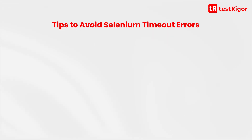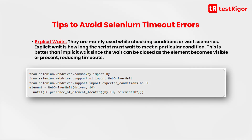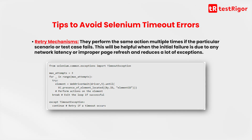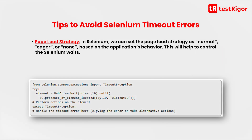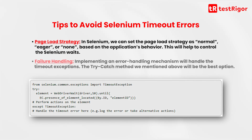Tips to avoid Selenium timeout errors. Explicit waits — they are mainly used while checking conditions or wait scenarios. Explicit wait is how long the script must wait to meet a particular condition. This is better than implicit wait since the wait can be closed as the element becomes visible or present. Retry mechanisms — they perform the same action multiple times if the particular scenario or test case fails. This will be helpful when the initial failure is due to network latency or improper page refresh and reduces a lot of exceptions. Page load strategy — in Selenium, we can set the page load strategy as normal, eager, or none based on the application's behavior. This will help to control the Selenium waits. Failure handling — implementing an error handling mechanism will handle the timeout exceptions. The try-catch method mentioned previously will be the best option.